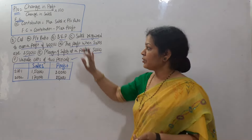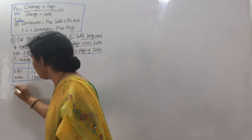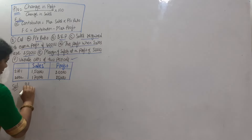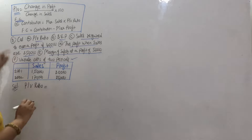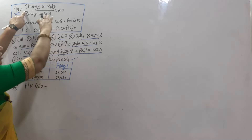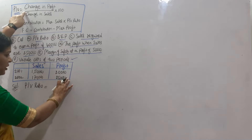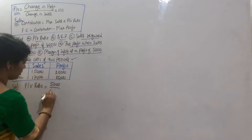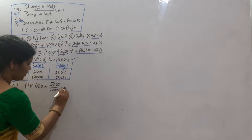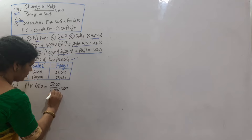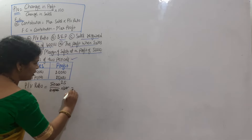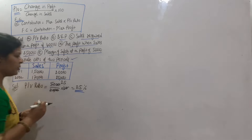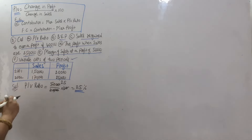Now let's work out the solution. PV ratio equals change in profit divided by change in sales into 100. Change in profit is 5,000 and change in sales is 20,000, into 100. So PV ratio is 25%.